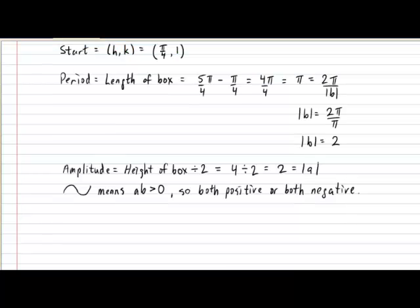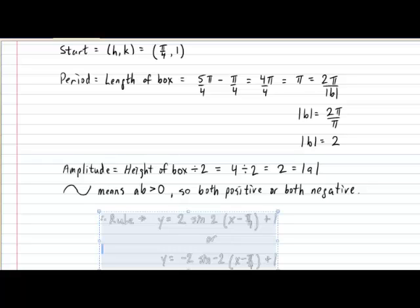Putting all these clues together will produce us a final rule of y equals 2 sine of 2 multiplied by (x - π/4) plus 1. Or the second version where both a and b are negative the rule could also be negative 2 sine negative 2 multiplied by (x - π/4) plus 1.